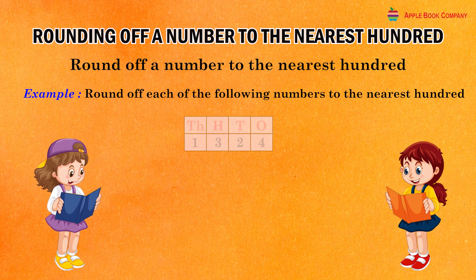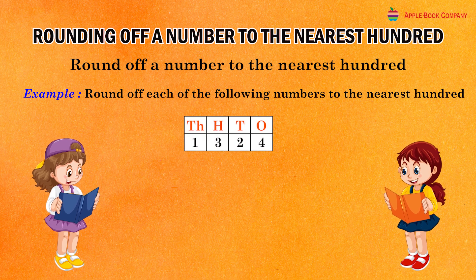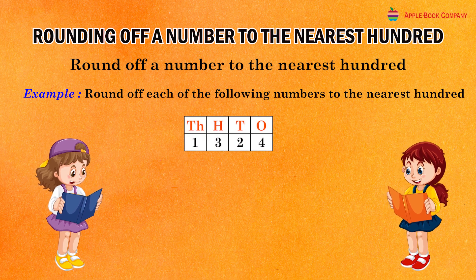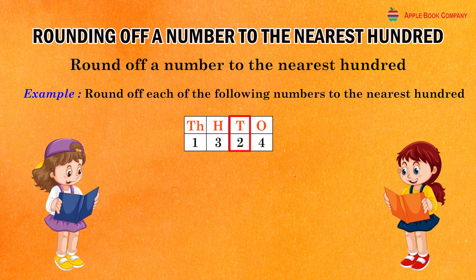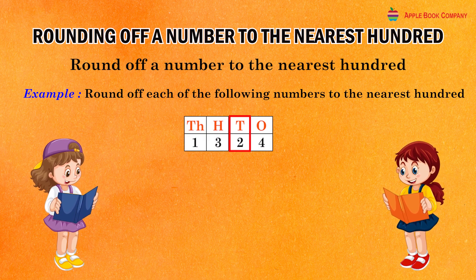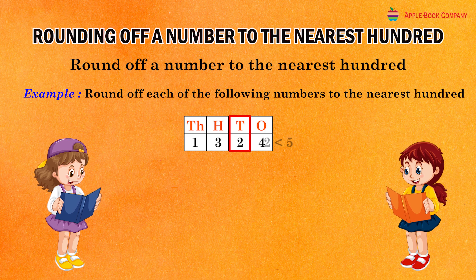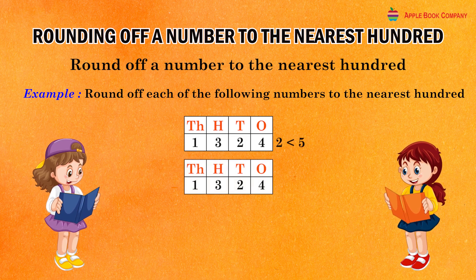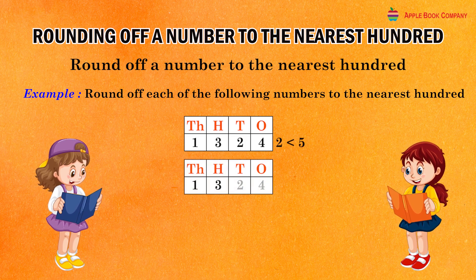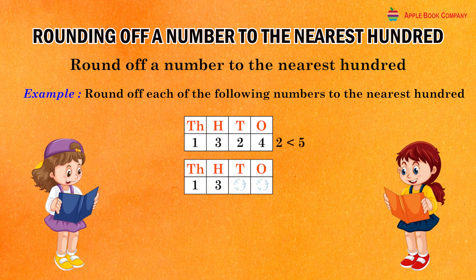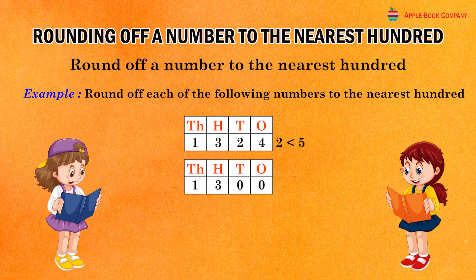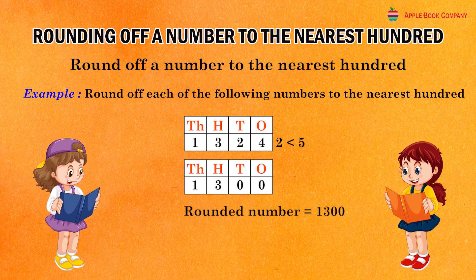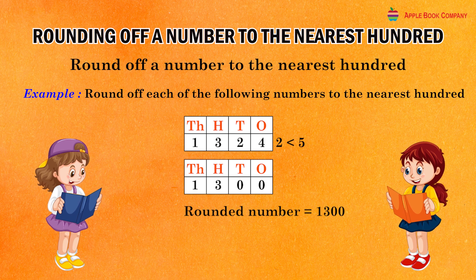Given number 1324: the ten's digit is two which is less than five. So, replace each one of the tens and one's digits by zero and keep the other digits as they are. Rounded number is equal to 1300.